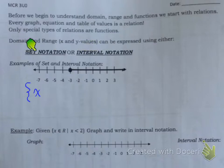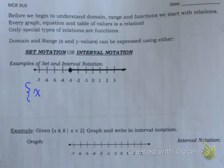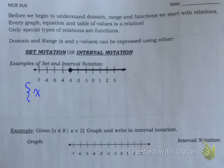Today we're going to work on just understanding what set notation and interval notation is. At the grade 11 level, you're expected to know set notation. In mixed, we're starting with the same as the 3U, we're also doing 3M. We're going to start with set notation and how to identify all of these. Tomorrow we're going to work on these other concepts and definitions. Specifically today, we're going to look at examples of set and interval notation.